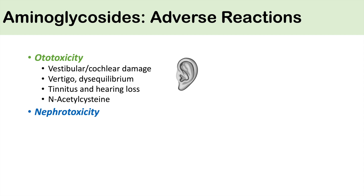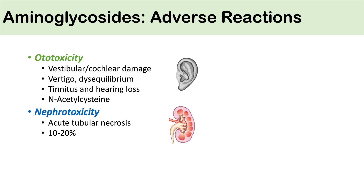The other important adverse reaction is nephrotoxicity, in the form of acute tubular necrosis. It generally occurs in about 10% to 20% of patients who receive aminoglycosides. Fortunately, most of these cases are reversible. So the big issues with aminoglycoside use are ototoxicity and nephrotoxicity, leading to acute kidney injury via acute tubular necrosis.